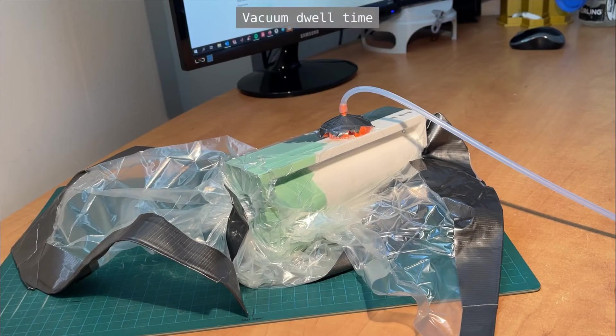The vacuum assembly should be left for at least 24 hours to allow time for the epoxy soaked prepreg to begin to flow and to remove any air trapped between layers. Check the vacuum gauge periodically to make sure no leaks have appeared and fix them if applicable.